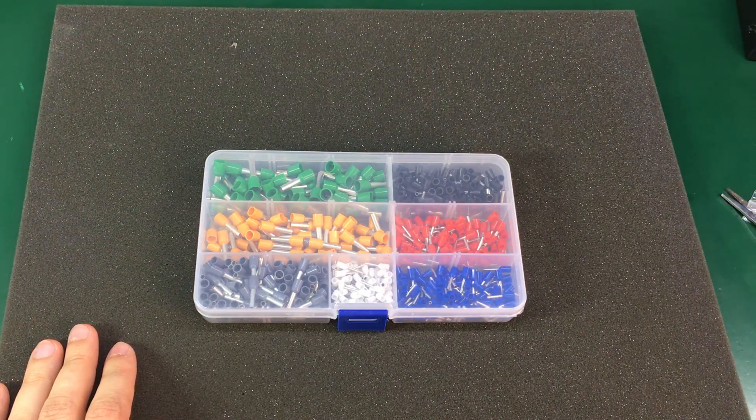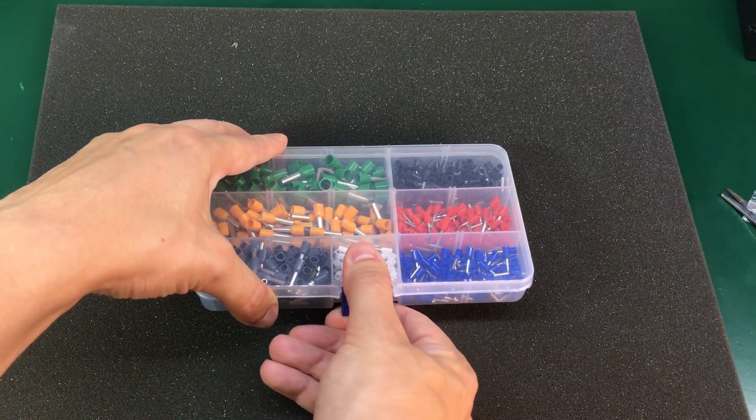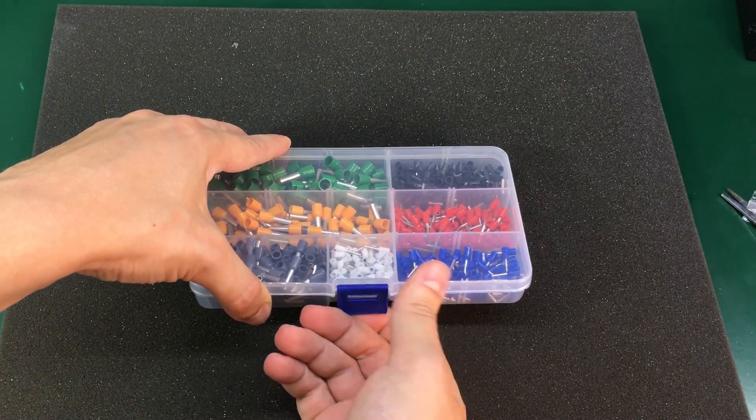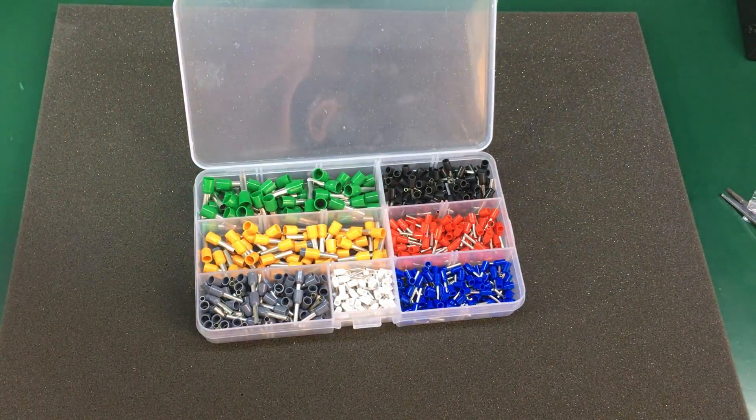Next I got this 600 pieces ferrule kit from Banggood. These are excellent for any kind of wiring. Be it house electrical wiring. Or if you're just doing some bench leads. Like I'm doing mostly.